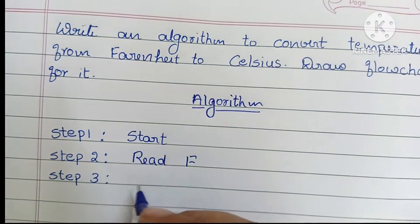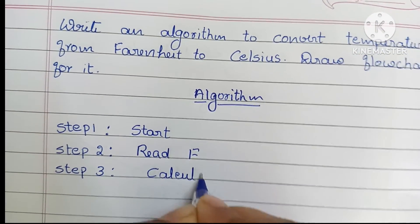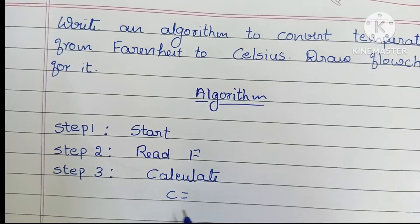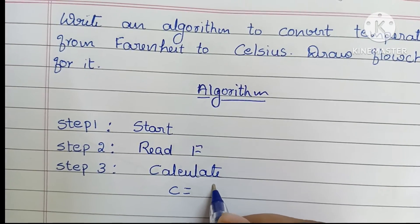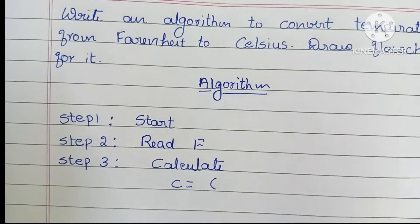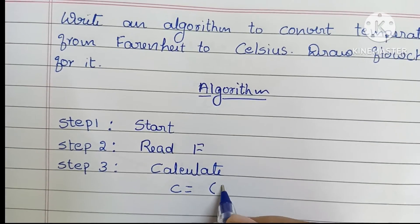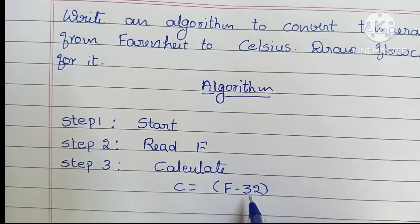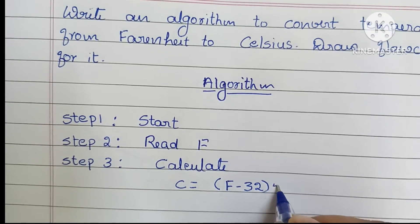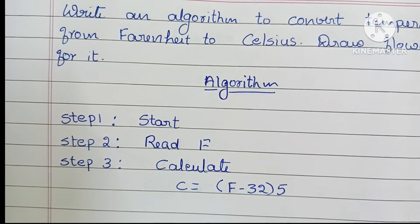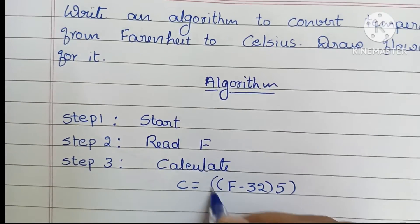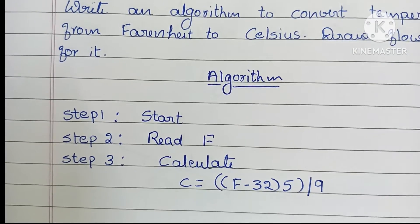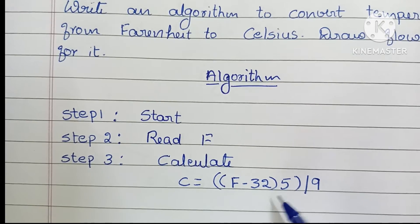Step 3: We have to calculate the process. Here we have to convert temperature from Fahrenheit to Celsius, so we need to find the value of Celsius. Write: Calculate C = (F - 32) × 5 / 9. First subtract 32 from the Fahrenheit value, then multiply by 5, then divide the result by 9.